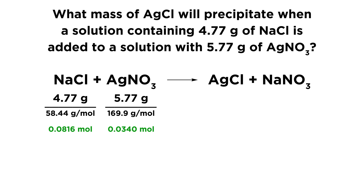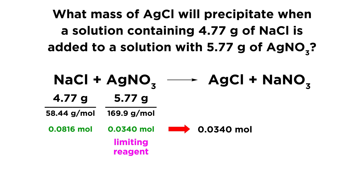Because these are in a one-to-one ratio in the balanced chemical equation, it is very simple — the one we have less of is going to be what limits this reaction. So the silver nitrate is going to be the limiting reagent. And because we also have a one-to-one ratio of silver nitrate to silver chloride, we know we're going to get a one-to-one ratio there, so we are going to produce 0.34 moles of silver chloride precipitate.